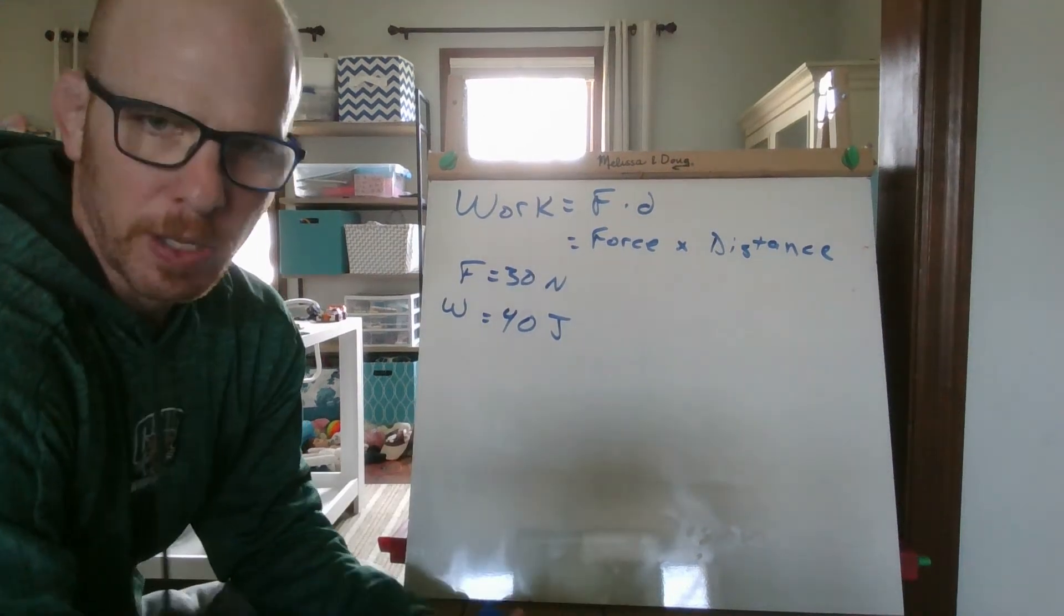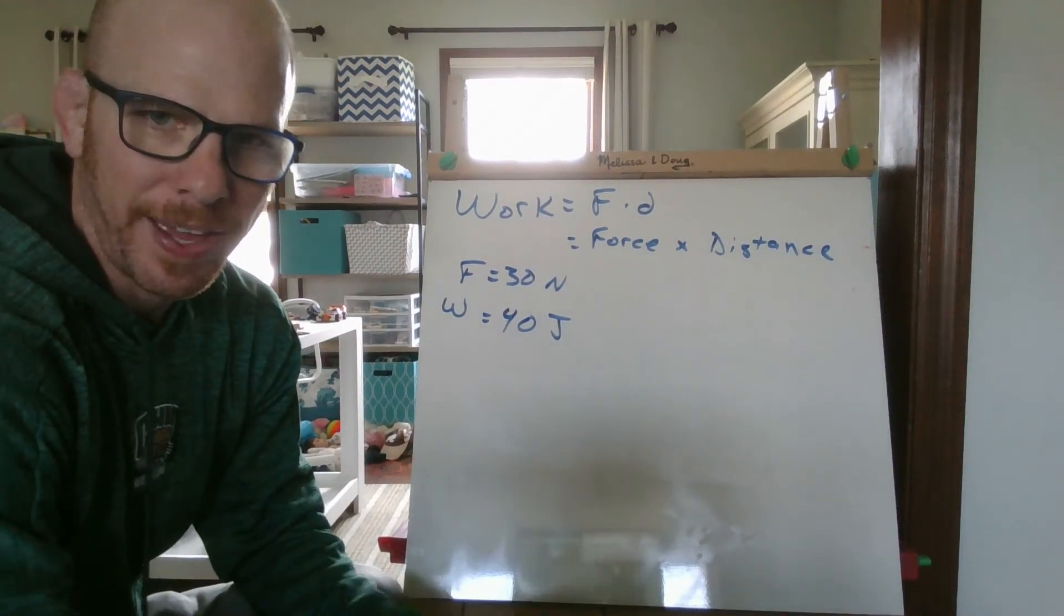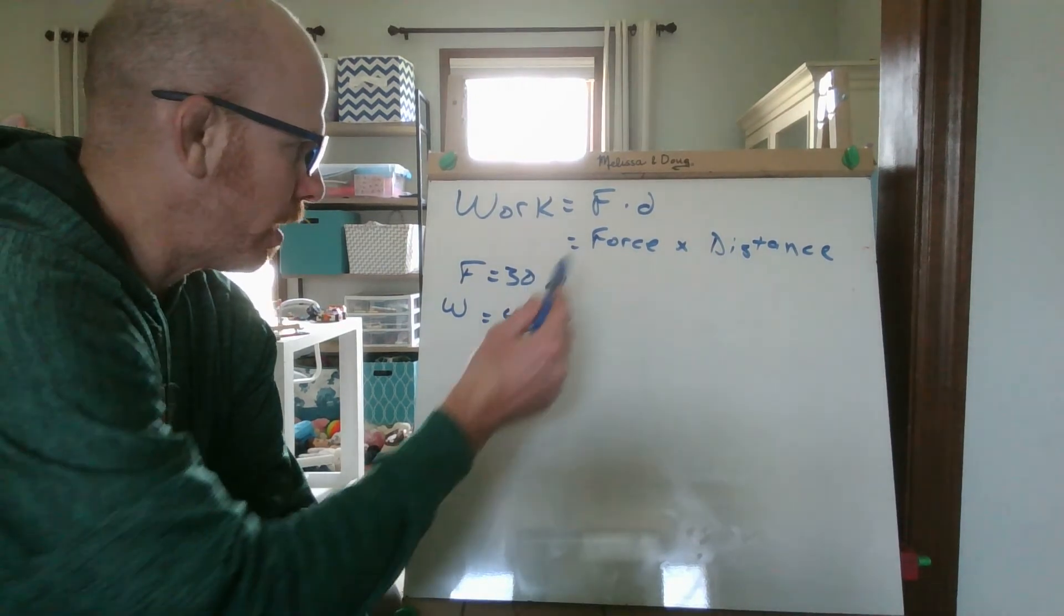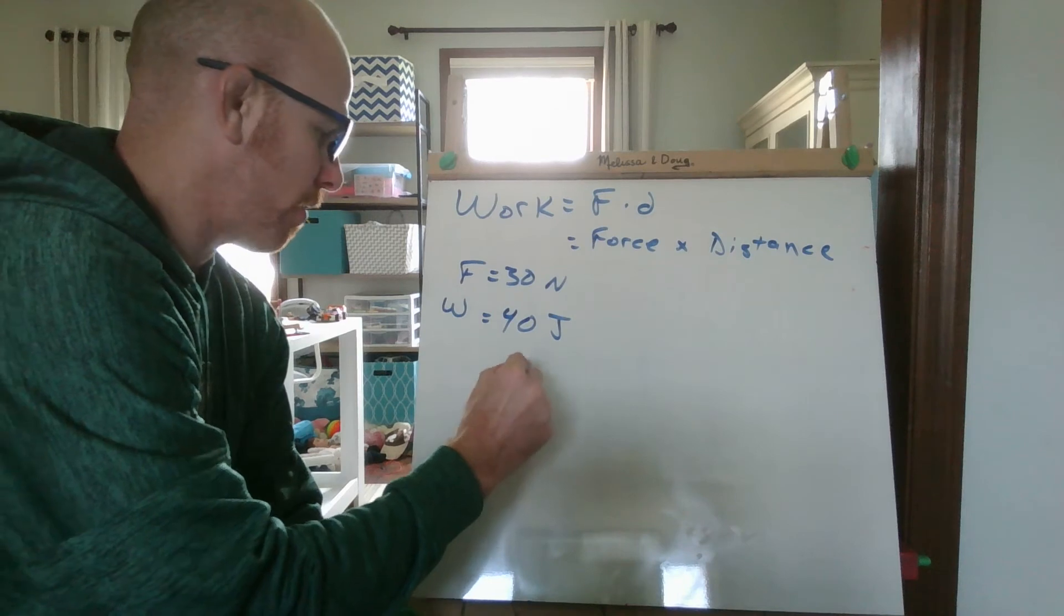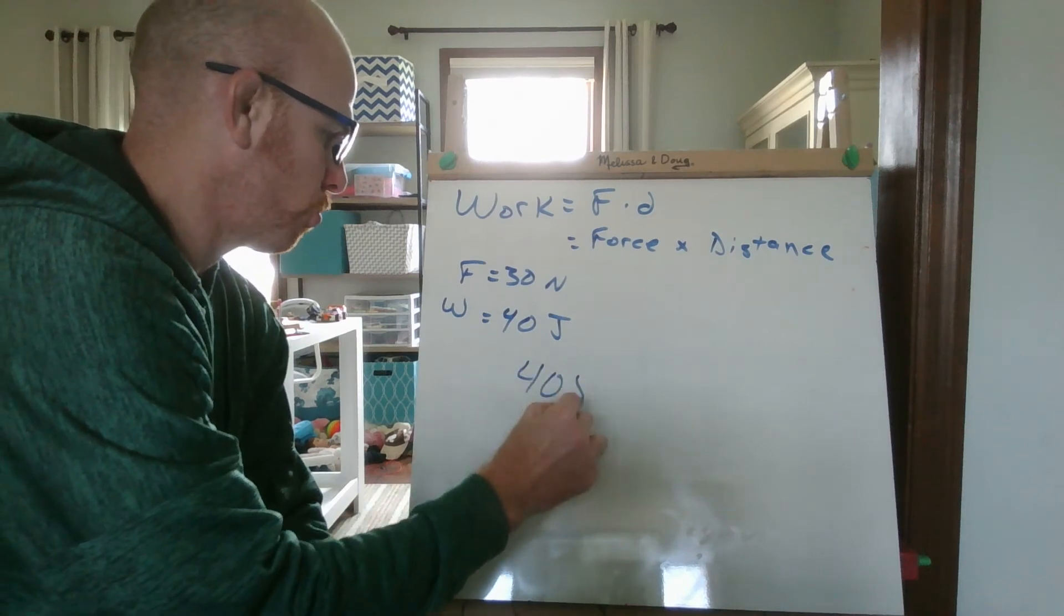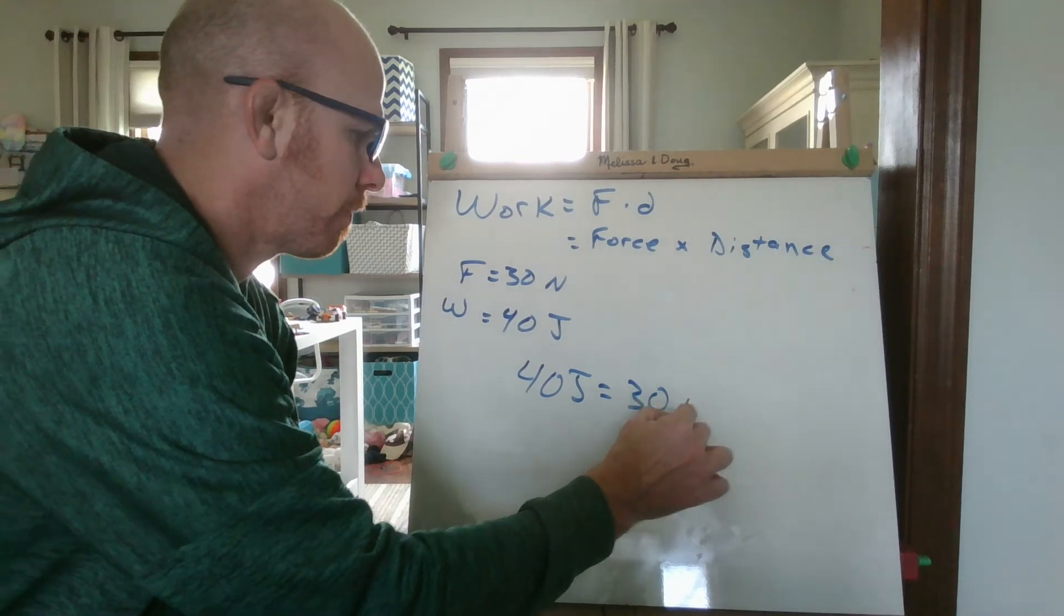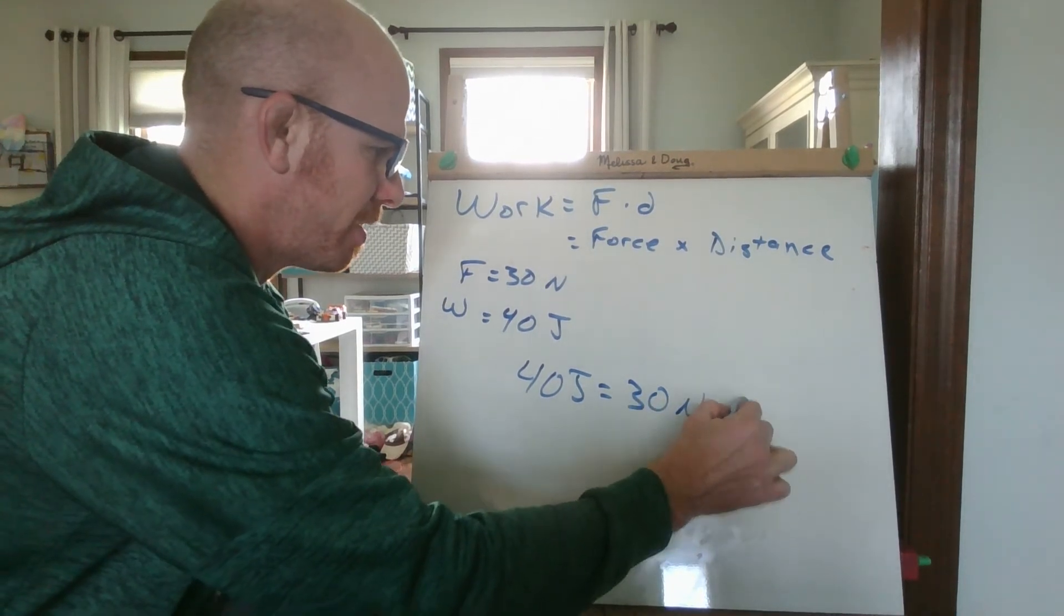So now let's manipulate the equation here. What if I have force but I don't have the distance? We did a lot of these in class when we were together. So if I say 40 joules, which is the work, equals 30 newtons times the distance.